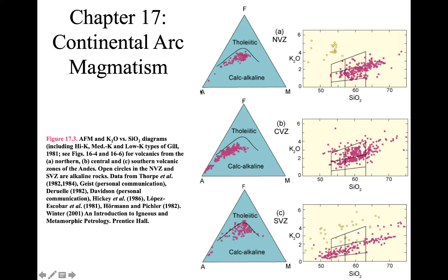Oh, I should explain what this means. A is total alkalies. So it's sodium plus potassium. F is iron. So that's F is short for FeO. And M is for magnesium, MgO. And we call this the AFM diagram or alkalies, iron, and magnesium. Tholeiitic rocks tend to be enriched in iron and they're not as enriched in alkalies.